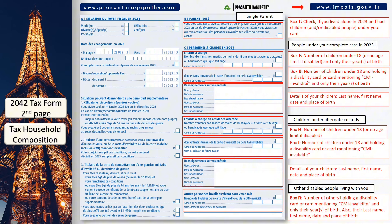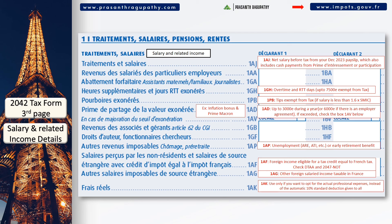On the third page of the 2042 form, you must add all your income from salary, pension, etc. Salaried employees can add the net salary before tax from your December 2023 payslip in line 1AG. If you were a student and did not earn any income during 2023, you can enter 0 in 1AG — this zero tax declaration will be useful for many things in the future. If you had a student job, you must only declare the part of the salary that exceeds 5,204 euros in 1AG.